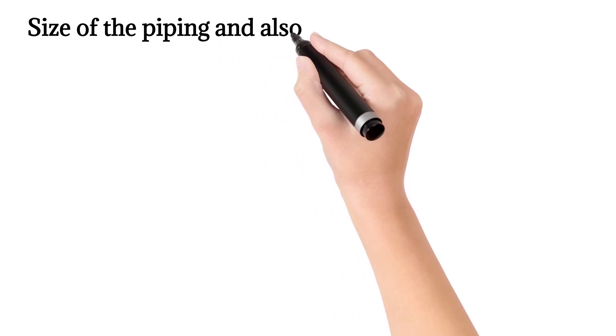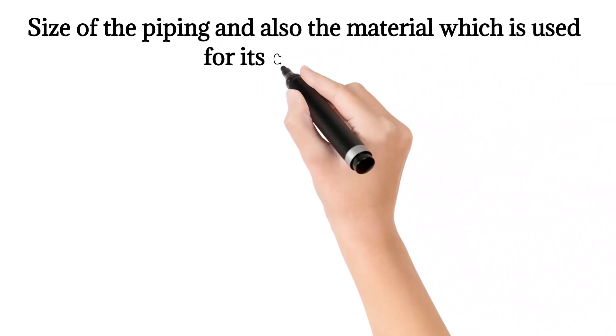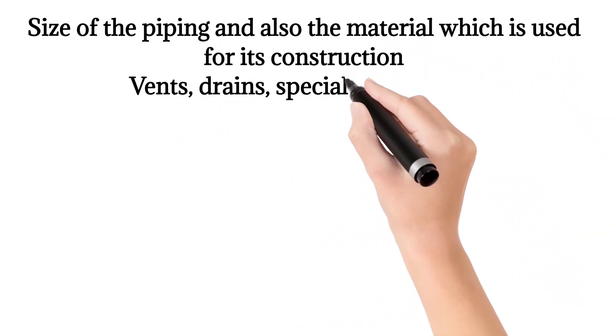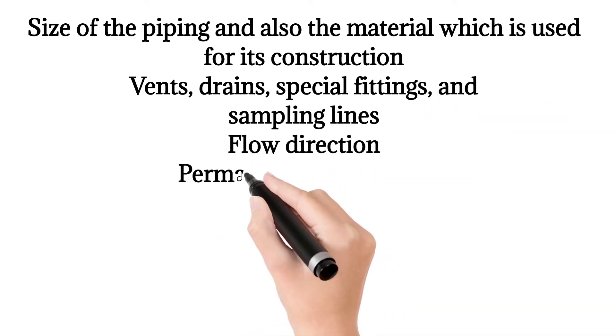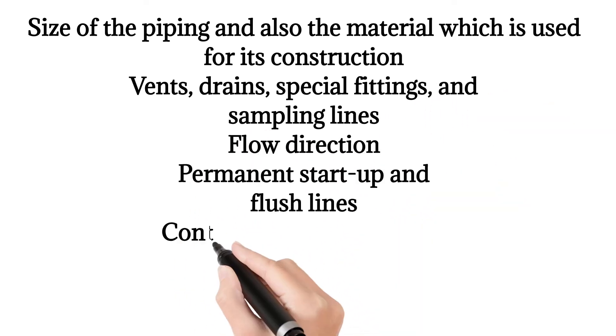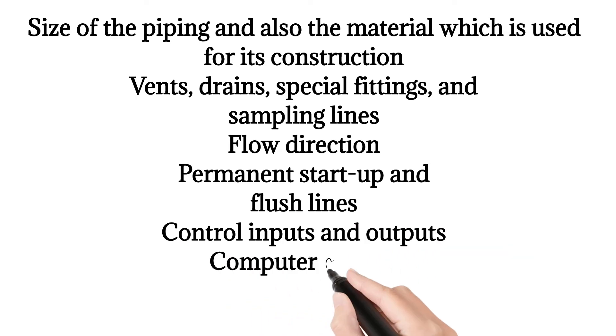Size of the piping and also the material which is used for its construction. Vents, drains, special fittings, and sampling lines. Flow direction, permanent startup and flush lines. Control inputs and outputs. Computer control system input.